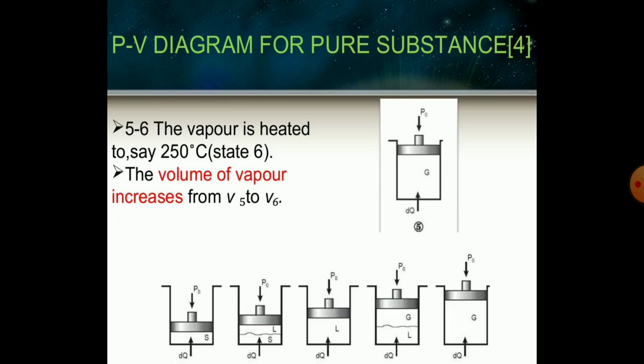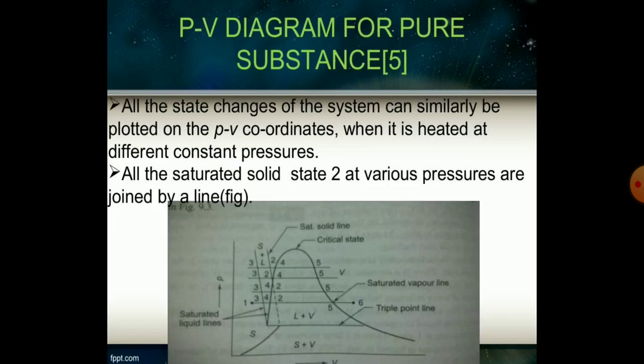At the last stage, from point five to six, the vapor is heated above 250 degrees Celsius and vapor formation is increased from V5 to V6. All these stages are changes of system and can be similarly plotted on P-V coordinates when heated at different constant pressures. All the saturated solid state two at various pressures are joined by a line. The line diagram you can see on the P-V diagram, the various states and various points we have considered from one to six are plotted.